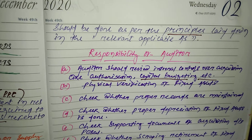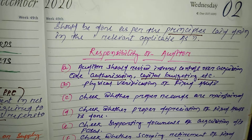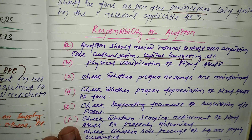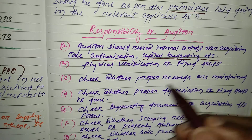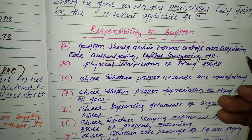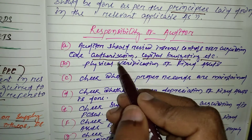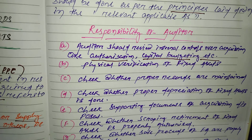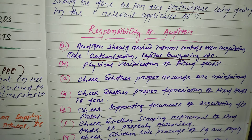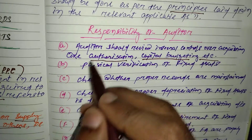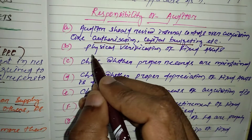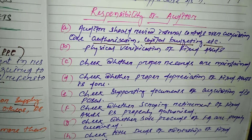Now, what are the responsibilities of the auditor in case of audit of fixed assets? The first and most important responsibility is that the auditor should review the internal control system over acquisition, like authorization, capital budgeting, etc.